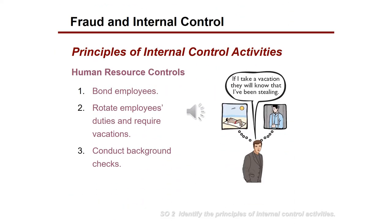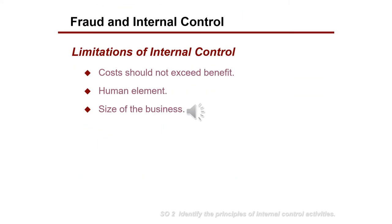Another internal control activity relates to human resource controls. There are practices that human resources can implement to deter and prevent fraud or issues within the business. These include bonding employees, rotating employee duties, requiring them to take vacations, and conducting background checks for new hires.